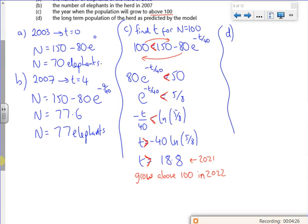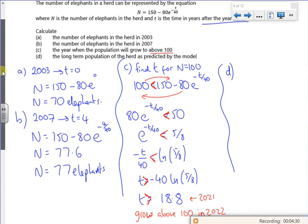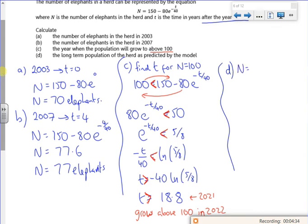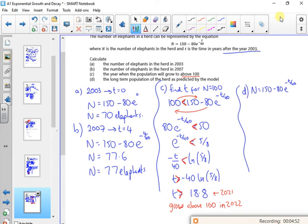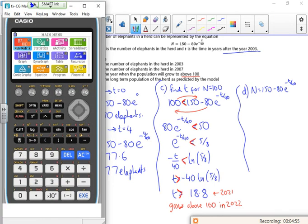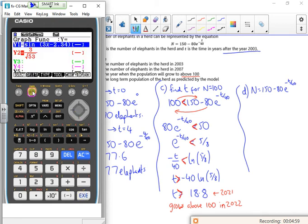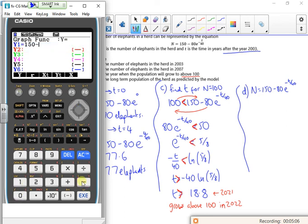So long-term prediction. Let's have a look at this equation now. So I've got N equals 150 minus 80 e to the minus t over 40. In terms of a graph, if we graph it. Hang on. So let's see. This will take some faffing around a minute. So what have I got. So I've got 130 minus 80 e to the minus x over 40.